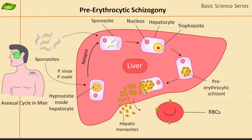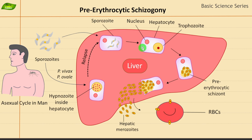The next video will cover the erythrocytic schizogony. I hope the video was helpful for you to understand the life cycle of the malaria parasite, with different forms especially focusing on pre-erythrocytic schizogony. We will be bringing more videos on parasitology, biosciences, biochemistry, and genetics. Please subscribe to the channel, hit the like button, and share the video. Thank you, take care!